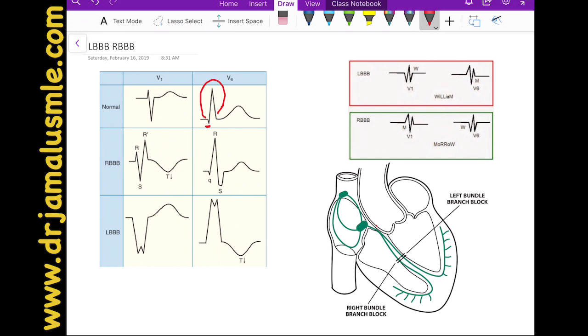What happens when you have a right bundle branch block? Basically, there's obstruction over here. And when this happens, electricity is still going to go through the left side more than the right, and the right side will be delayed. And that's why you will still have a Q wave in V6, just like normal patients.